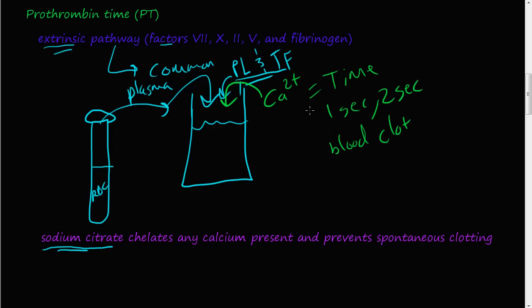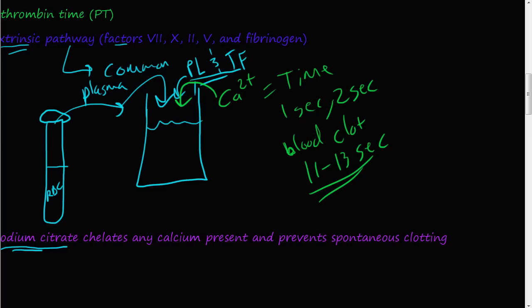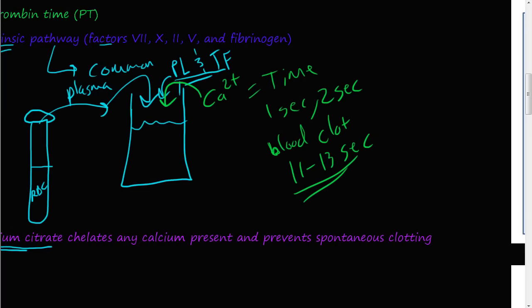They're going to see how long the blood clot takes to form — usually 11 to 13 seconds. Once they get this result, they do a calculation using the International Normalized Ratio, or the INR.